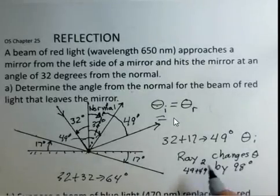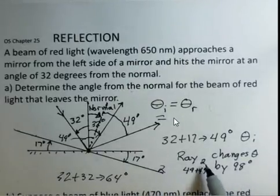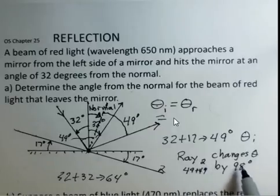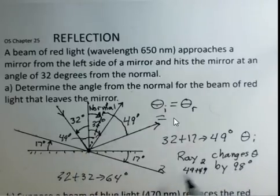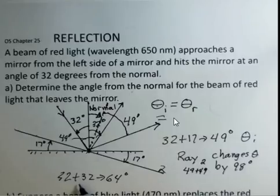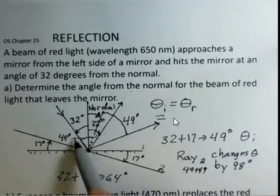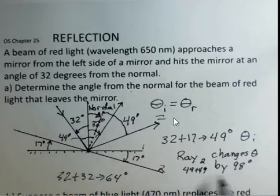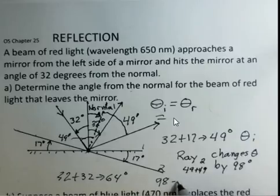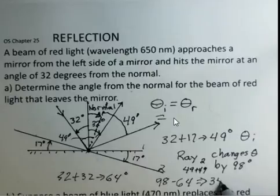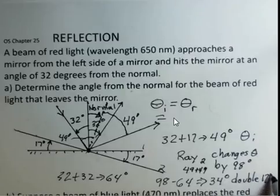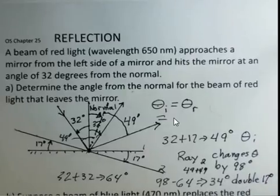This ray 2, when the mirror has been rotated, the ray is now 98 degrees away from where it came in to the system. The first position of the mirror, the ray leaves 64 degrees away from its incoming position. If you'd subtract these two, 98 minus 64, hopefully you're not too surprised. We get 34 degrees. 34 degrees is double the 17 degree rotation of the mirror.